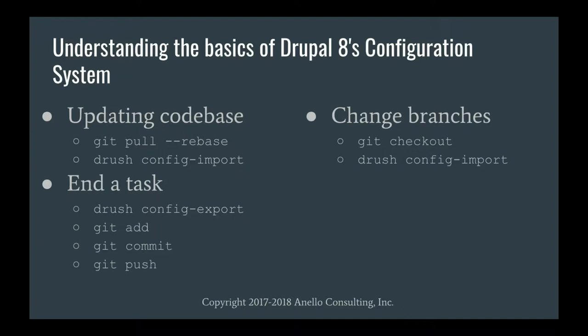The summary of the process: when you sit down and start a task, do a git pull — I do git pull --rebase — and right after, do a config import to make sure you have other people's configuration changes reflected on your local. When you finish a task, do your config export to make sure any config changes you made get captured as code, then git add, commit, and push. And when changing branches, right after git checkout, your very next step should be drush config import.